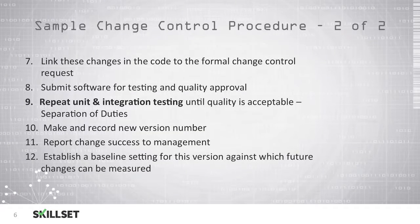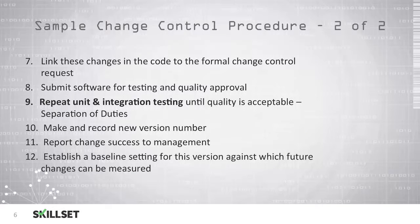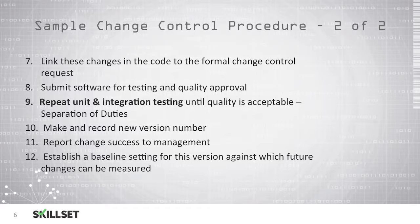Next, you will link these changes in the code to the formal change control request and approval. Step eight is to submit the software for testing and quality approval. Next, you will continue to repeat your unit testing and integration testing until the quality is acceptable, and you should have a separation of duties here where the testing is being done by someone other than the programmer who is creating the changes. Number ten, you will make and record your new version number, then you will report the change success to your management. Finally, you will establish a baseline setting for this version against which all of your future changes can be measured.